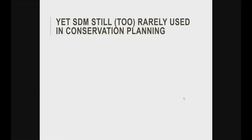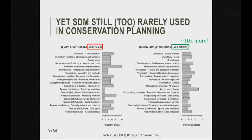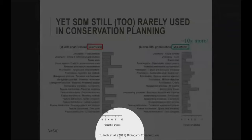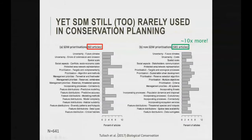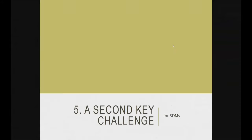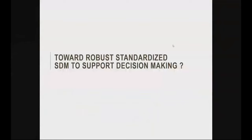A recent review shows that spatial prioritization including SDMs is still quite scarce — about ten times fewer than prioritization without SDMs. We still have some way to go toward comprehensive approaches. The second major challenge is that if we use SDMs in conservation planning, we need to ensure we use robust models and have standards for evaluating whether a model is good enough to be included.